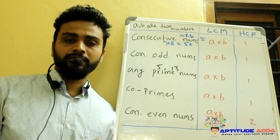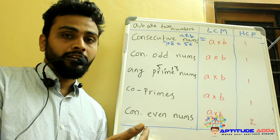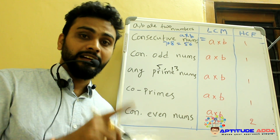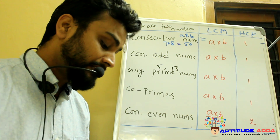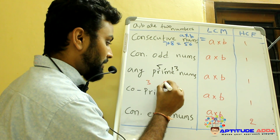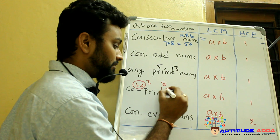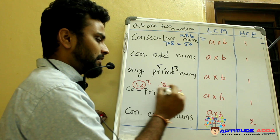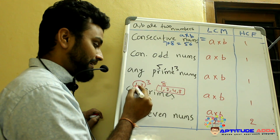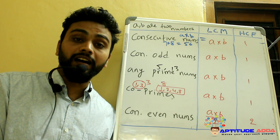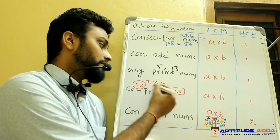Consider any two co-primes. What is co-prime? Two numbers are said to be co-primes if and only if they have no common factor other than 1. For example, 3 and 8 are co-primes. Factors of 3 are 1 and 3; factors of 8 are 1, 2, 4, 8. There is only one common factor for 3 and 8, that is 1. Other than 1 there is no common factor, so 3 and 8 are co-primes.